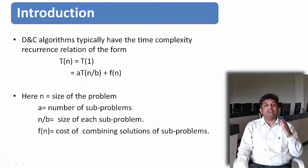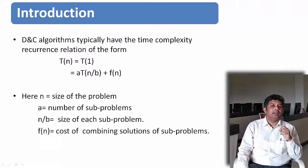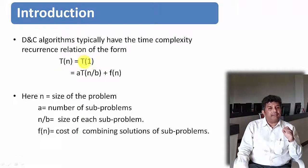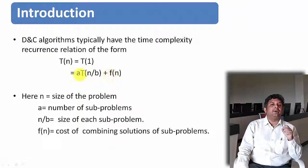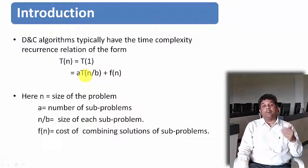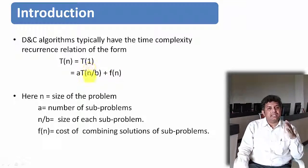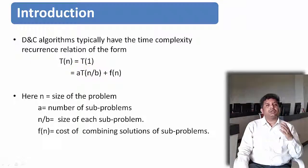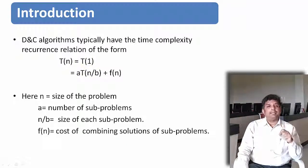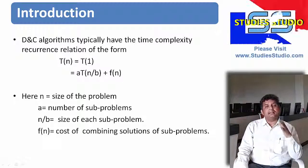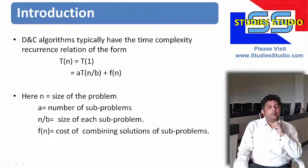Divide and conquer algorithms typically have time complexity in recurrence relation form. For T(n): if n is small, T(1) is the complexity; otherwise we write it as a·T(n/b) + f(n), where a is the number of sub-problems, b is the size factor of each sub-problem, and f(n) is the time required to combine all the sub-problems. There are three methods to solve a recurrence relation: substitution method, master method, and tree method.